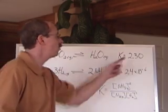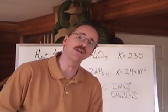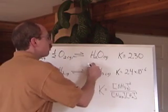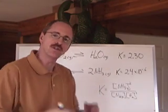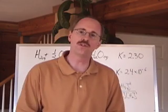So, what we say is a K value that has a number greater than one means that the products are favored in terms of the amount that is produced at equilibrium.